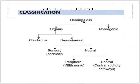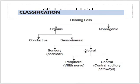Hearing loss is classified as organic or non-organic. Organic causes are divided into conductive and sensorineural. Conductive causes include otitis externa, wax, canal blockage, otosclerosis, otitis media, and cholesteatoma. Sensorineural can be sensory when the cochlea is damaged, or neural when the nerve itself or the central auditory pathway is affected.